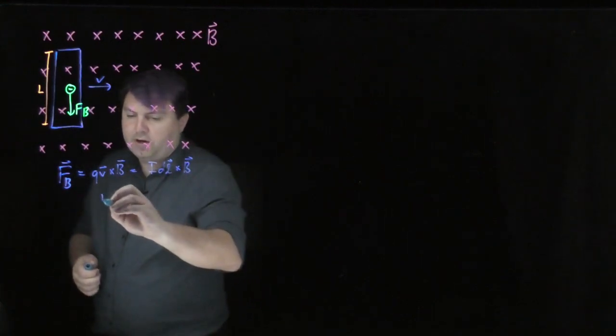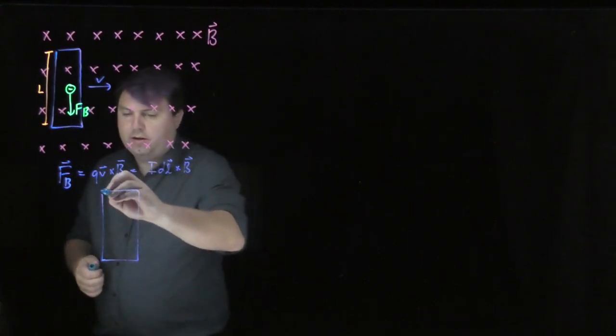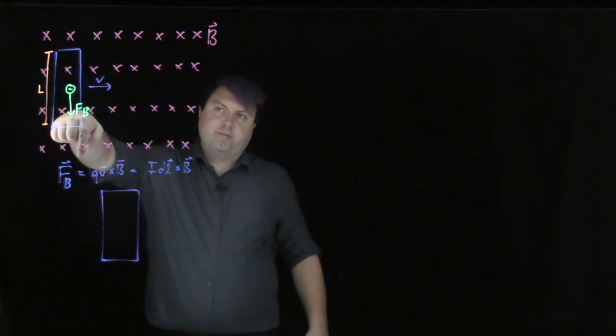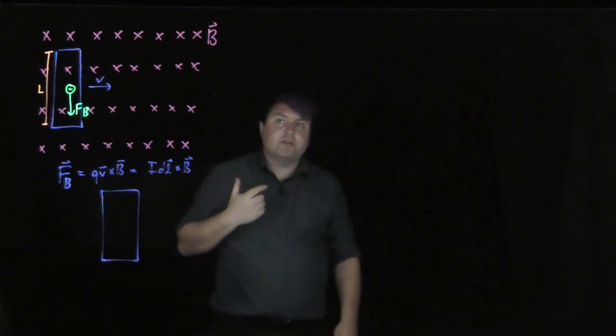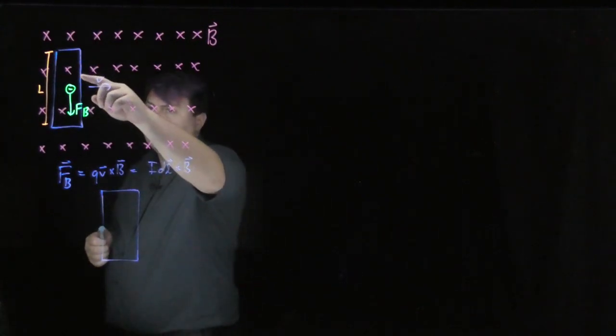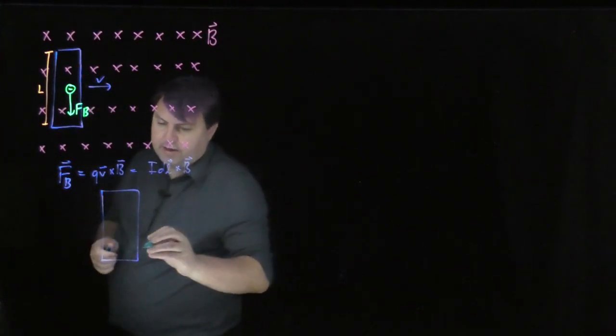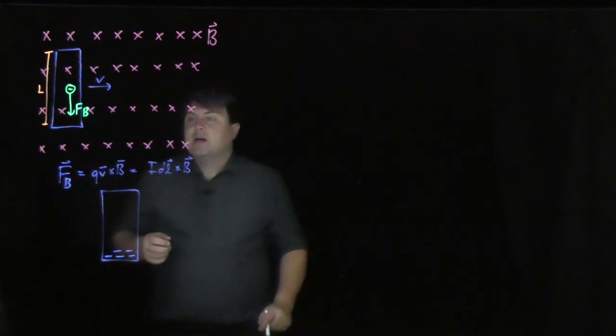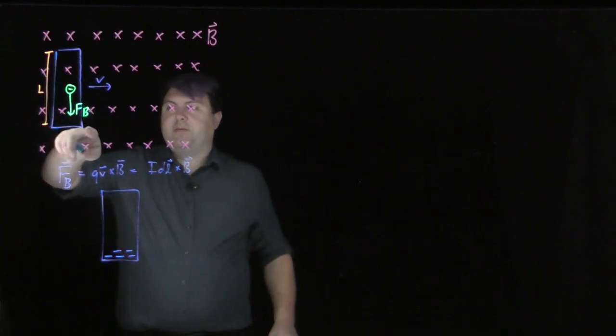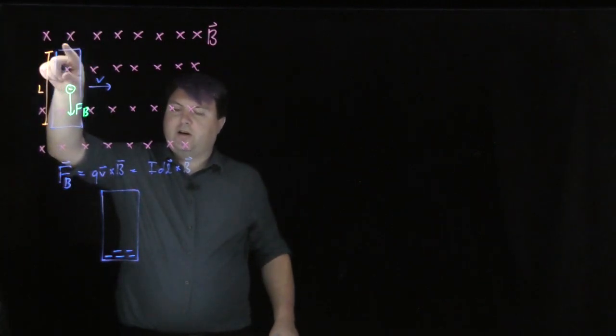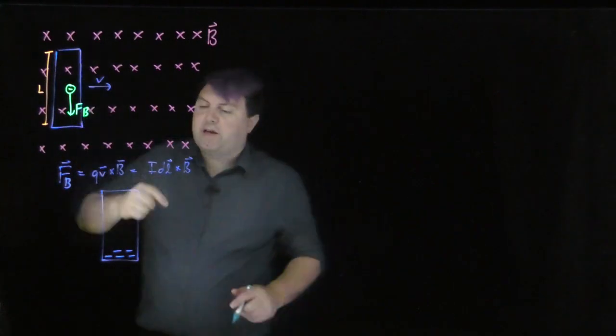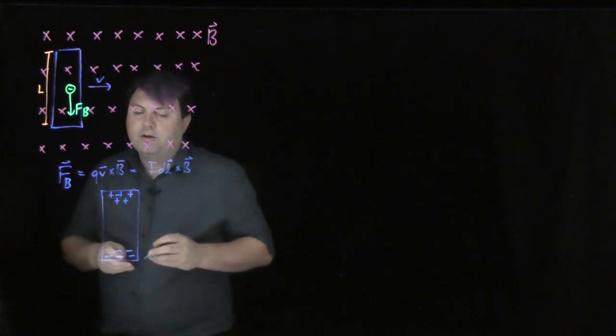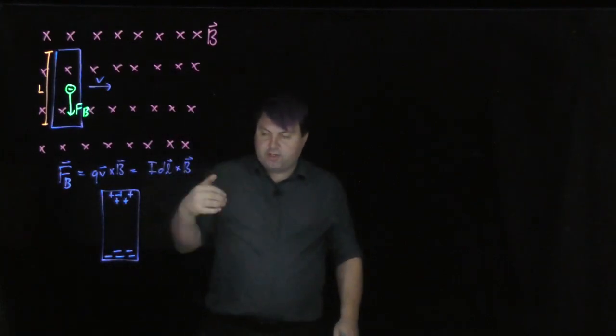Now looking at this bar, if we have electrons feeling a negative force and they're allowed to move, but the protons are not, then we're only going to see electrons start to accumulate down at the bottom. But if we have electrons accumulating down at the bottom, then near the top where all the electrons are gone, now this is going to be a net positive region.